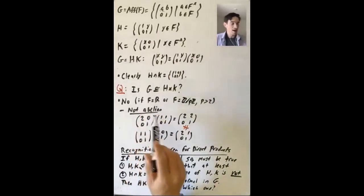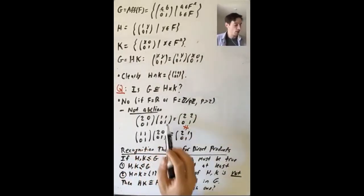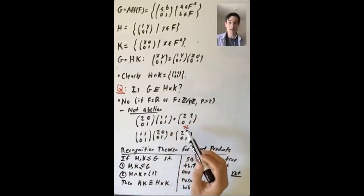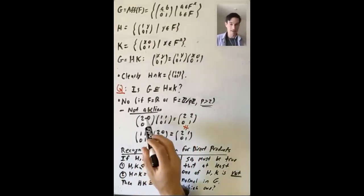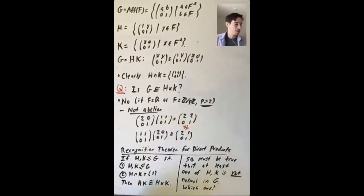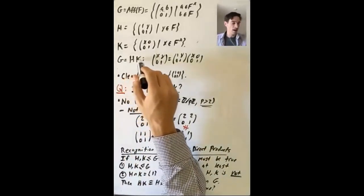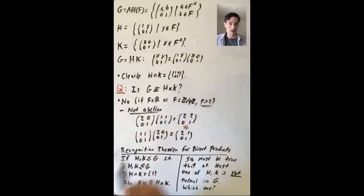To show G is not abelian, take two elements: [2, 0; 0, 1] times [1, 1; 0, 1] = [2, 2; 0, 1], but [1, 1; 0, 1] times [2, 0; 0, 1] = [2, 1; 0, 1]. These are not equal. That's why we exclude p = 2, since [2, 0; 0, 1] is not an element of the group when p = 2 — we already know that when p = 2, G has size 2 and is definitely abelian. So G equals HK with trivial intersection, but G is not isomorphic to H × K.